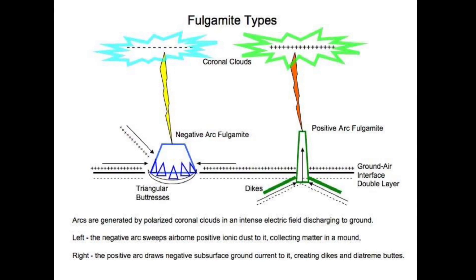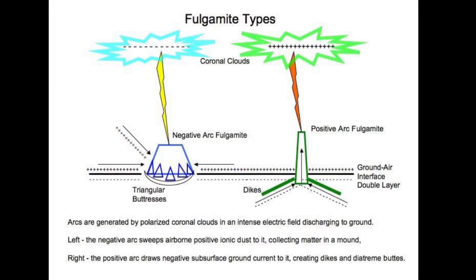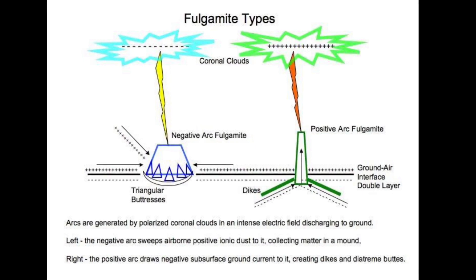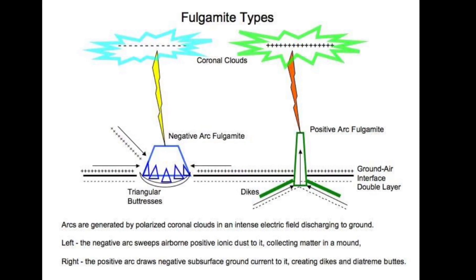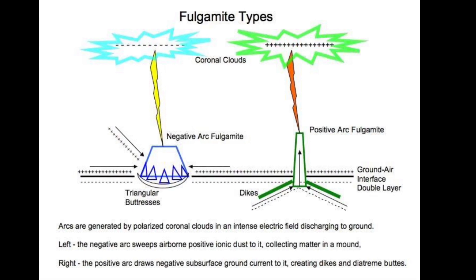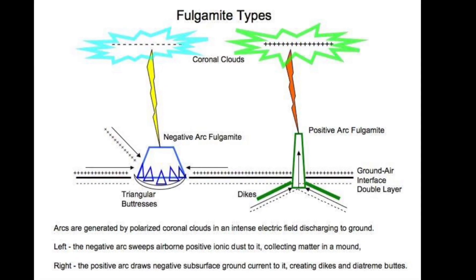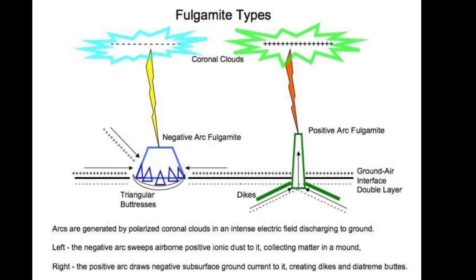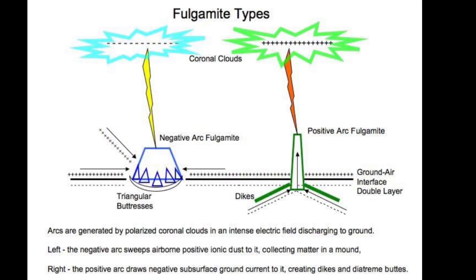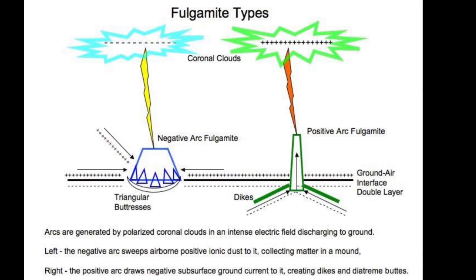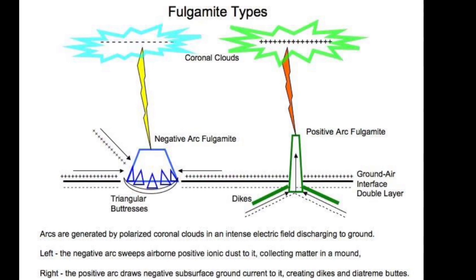Arcs are generated by polarized coronal clouds in an intense electric field discharging to ground. On the left, the negative arc sweeps airborne positive ionic dust to it, collecting matter in a mound. On the right, the positive arc draws negative subsurface ground current to it, creating dikes and diatreme buttes.